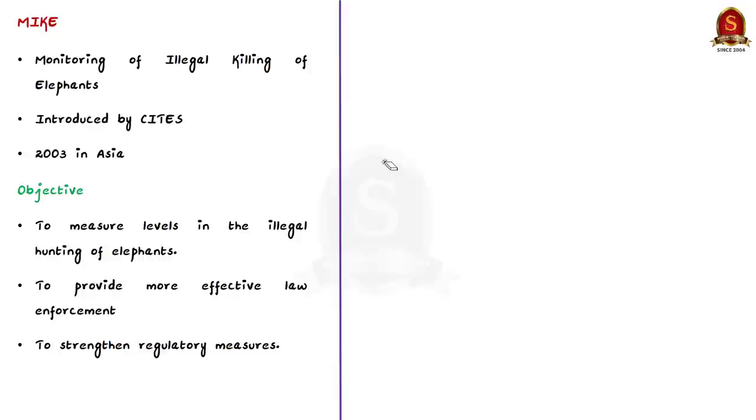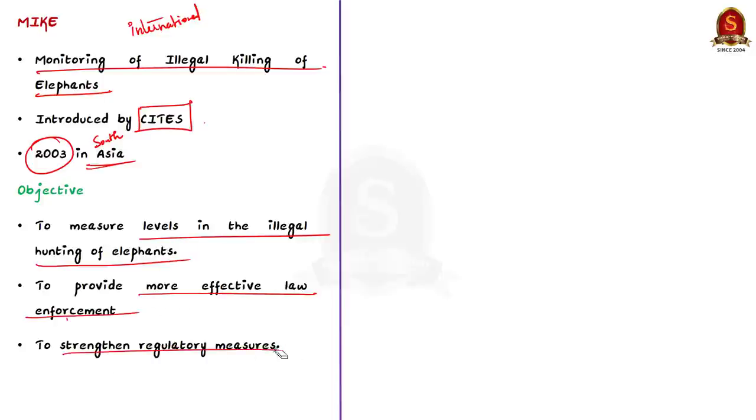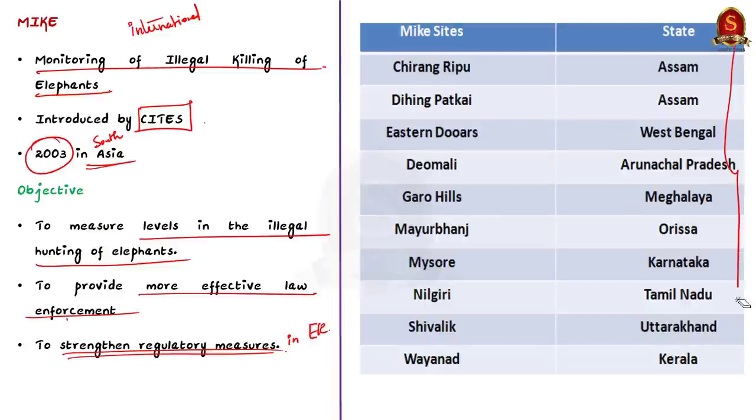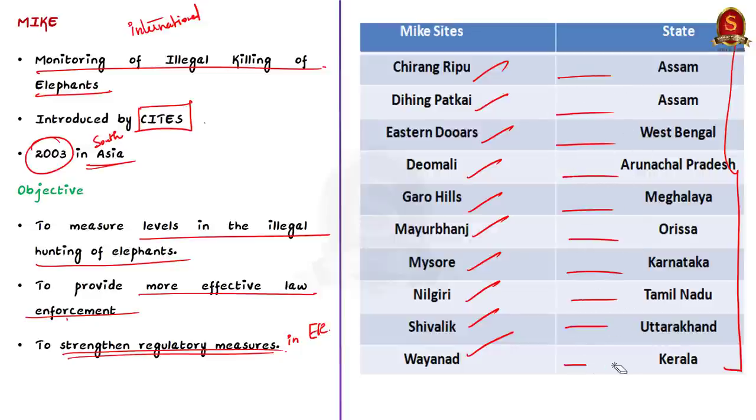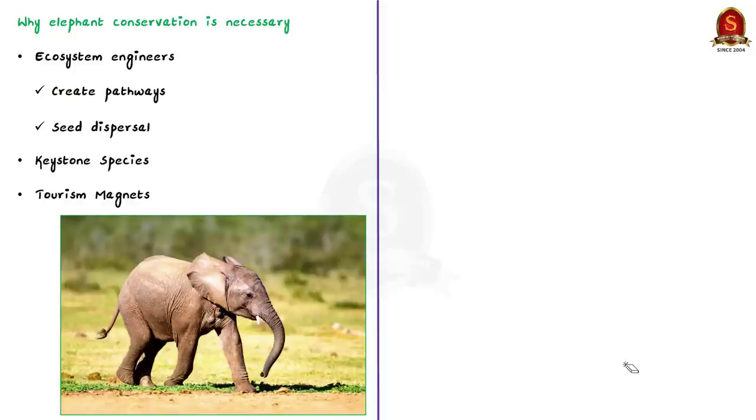Moving on to the international effort, it is nothing but MIKE, M-I-K-E that is monitoring of illegal killing of elephants. It comes under CITES. MIKE was started in 2003 in South Asia to measure levels in the illegal hunting of elephants. And using this information, MIKE aims to provide more effective law enforcement and strengthen the regulatory measures in elephant range states. In India, project elephant has been formally implementing MIKE. And I have displayed here 10 MIKE sites in India. Just go through it. If a particular name of a location is given and it is asked as whether it is a MIKE site or not, you should be able to know it.